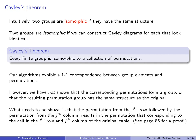What needs to be shown, technically, is that the permutation from the ith row followed by the permutation from the jth column results in the permutation corresponding to the cell in the ith row and jth column of the original table.